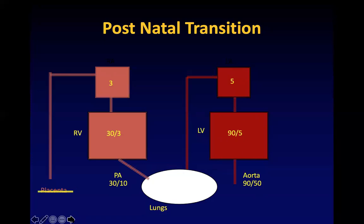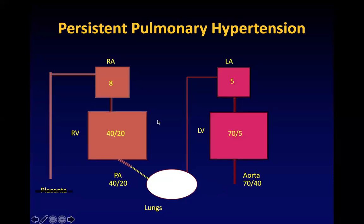Since the pressures on the left side have increased and the pressures on the right side have decreased, we see closure of the ductus arteriosus and the foramen ovale. The ductus venosus is closed because there is no flow from the placenta to the liver. Whenever there is pulmonary hypertension — because of a problem in the lung not being able to expand, fluid in the lung, stiff lung, or because the pulmonary arteries are not able to open at birth — this leads to persistent pulmonary hypertension where the pressures of the right side fail to fall.